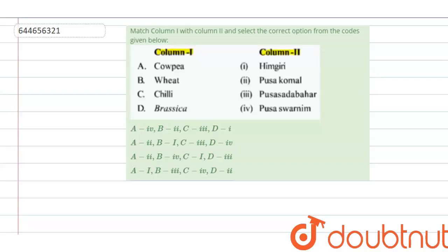The first one is cowpea. The variety of cowpea plant is Pusakomal, and this variety was developed so that the plant would be resistant to a bacterial disease known as blight.